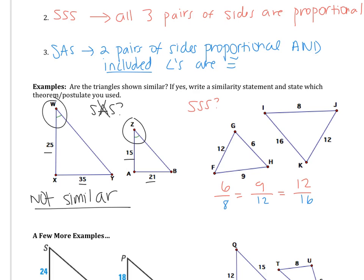Now I have to simplify these ratios and see if they're equal. The first ratio, dividing numerator and denominator by 2, gives me 3 over 4. The second one, dividing both by 3, gives me 3 over 4. The third one, dividing both by 4, gives me 3 over 4. All three proportions are equal, so we say yes, the triangles are similar by SSS similarity. You have to put the tilde after SSS so that we know we're talking about similarity and not congruency.